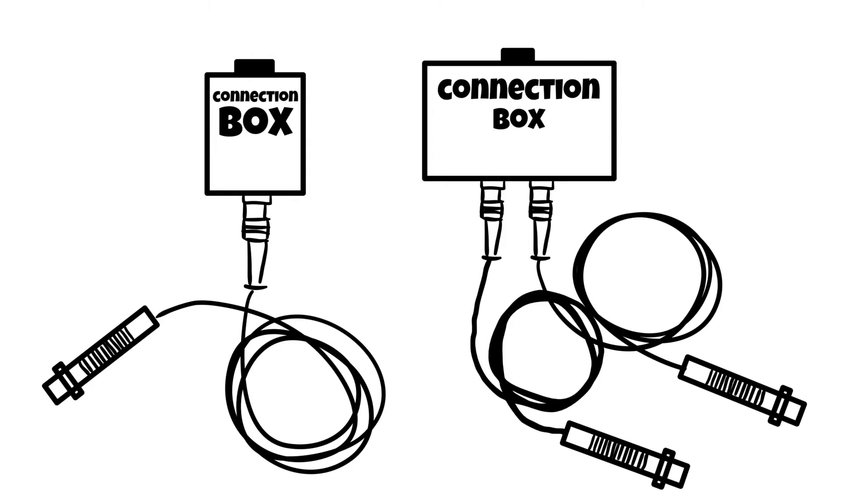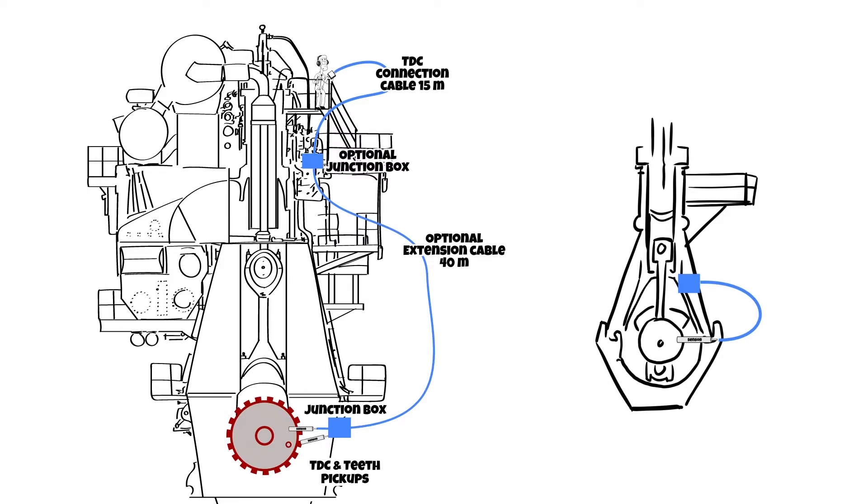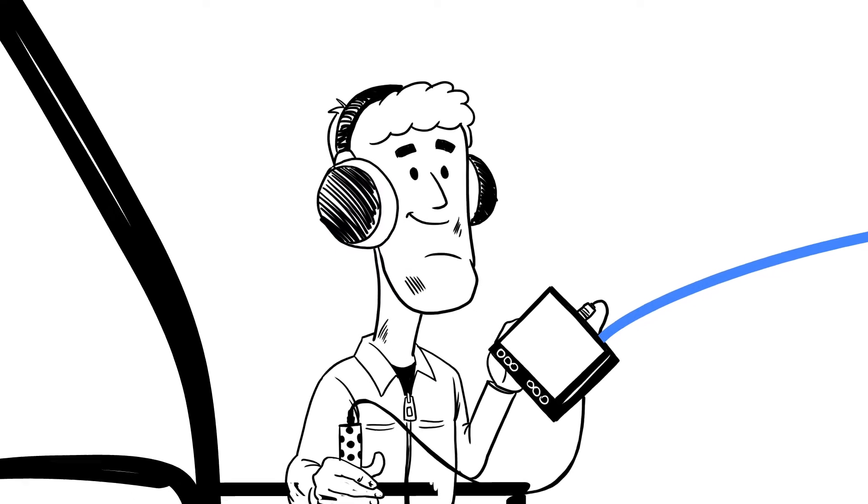Cable and device are color coded in blue to allow easy connection and to avoid mistakes. Your pre-mid automatically recognizes whether a pair of pickups, just a single TDC sensor, or no sensor is connected. Nothing needs to be configured on the device. Just start to measure as explained in the relevant video.